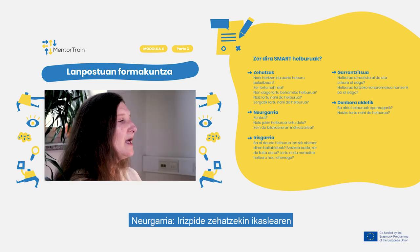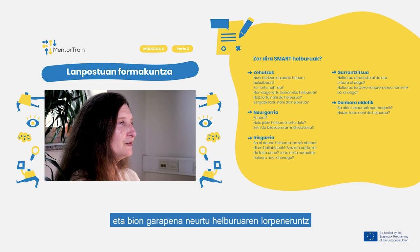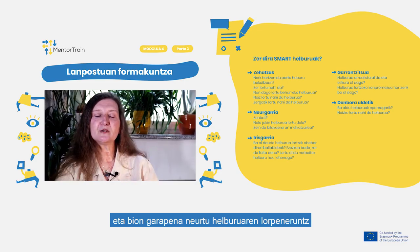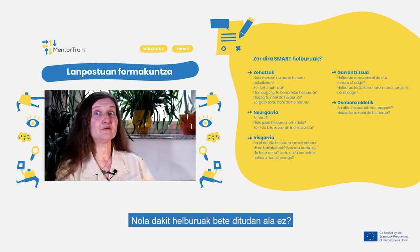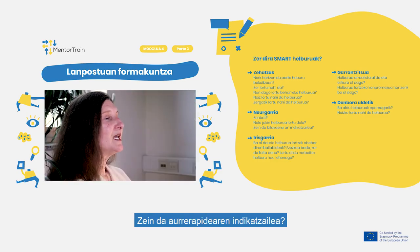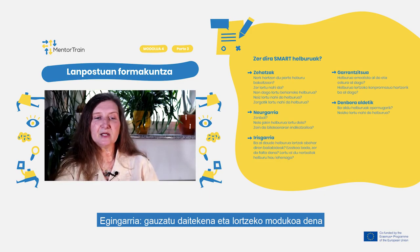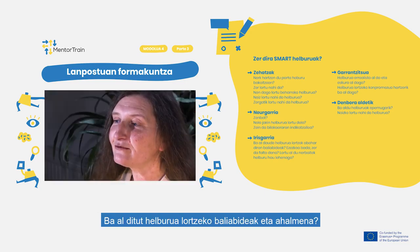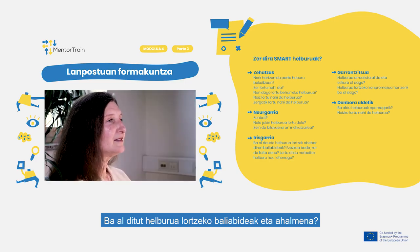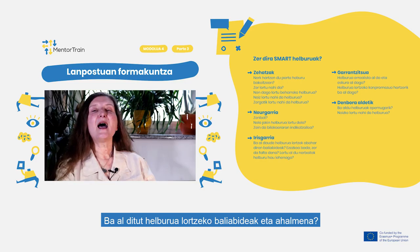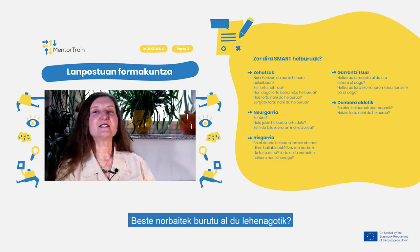Measurable — with specific criteria that measure your and your apprentice's progress toward the accomplishment of the goals. How many or how much? How do I know if I have reached a goal? What is my indicator of progress? Achievable — attainable and not impossible to achieve. Do I have the resources and capabilities to achieve the goal? If not, what am I missing? Have others done it successfully before?